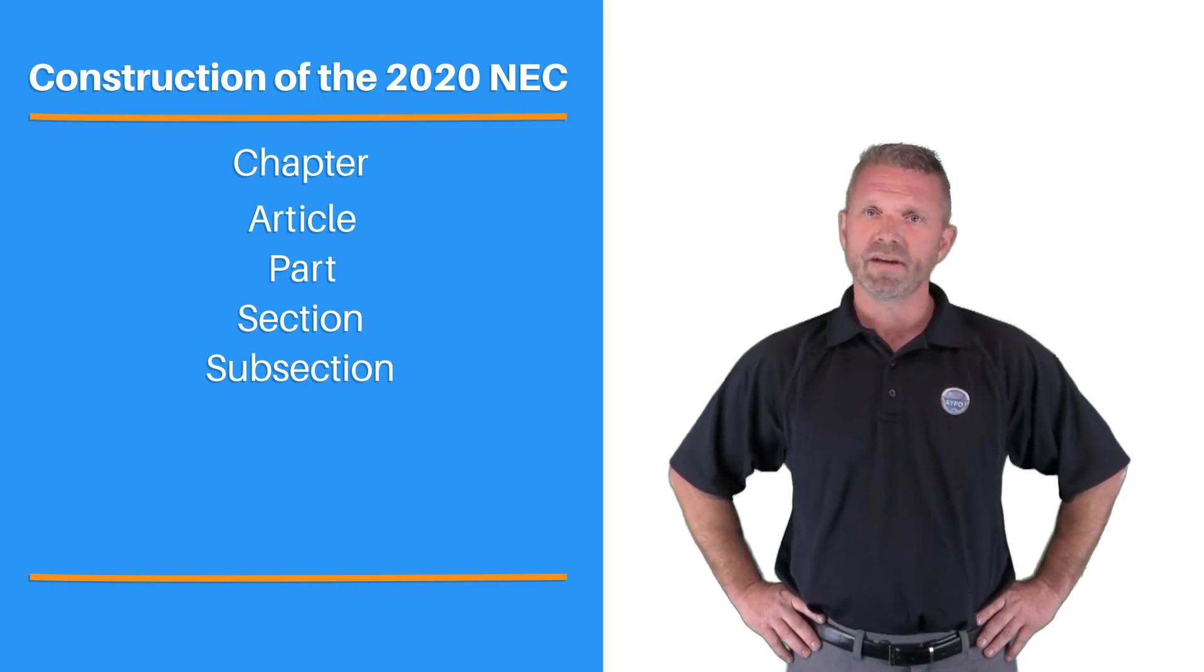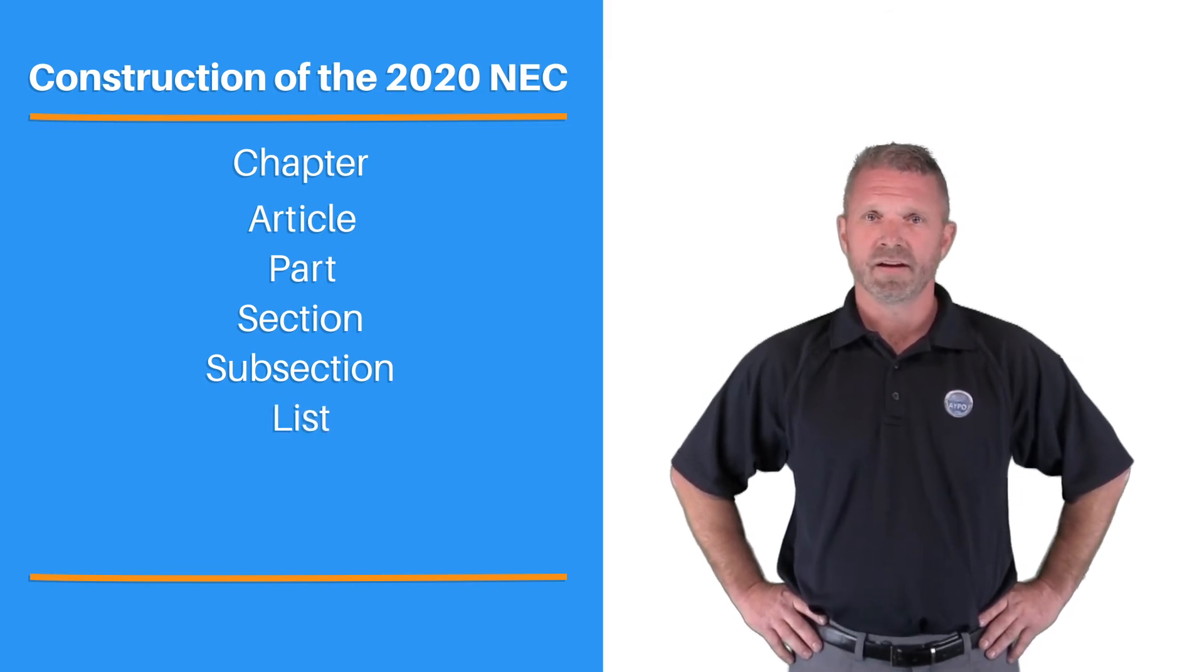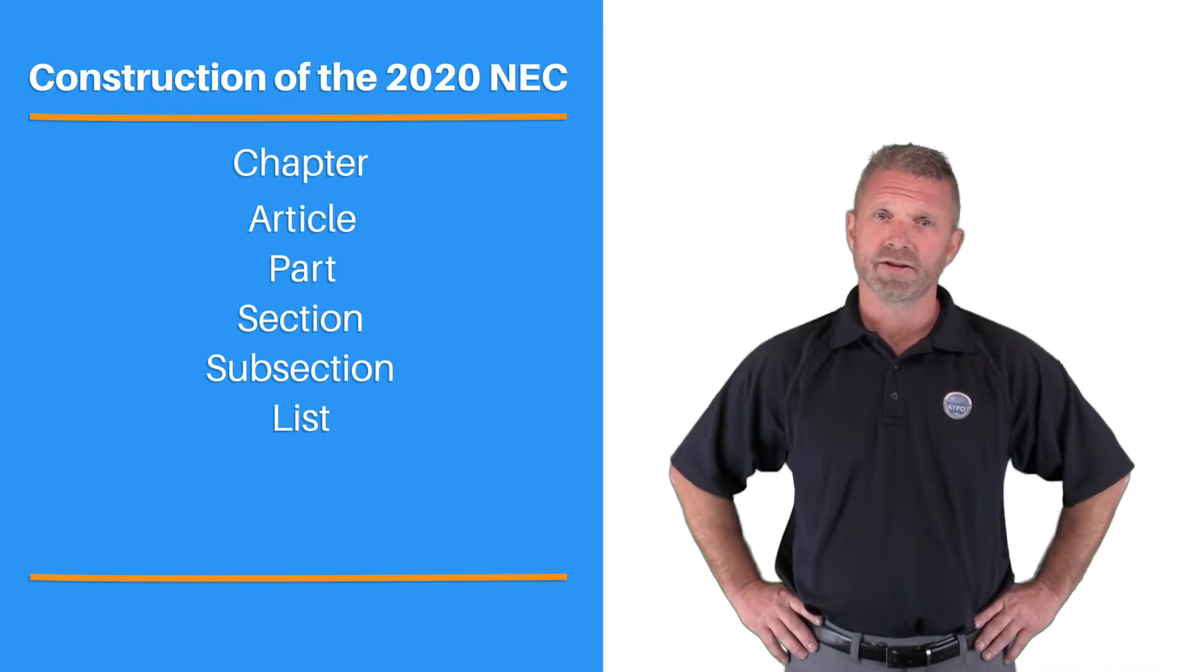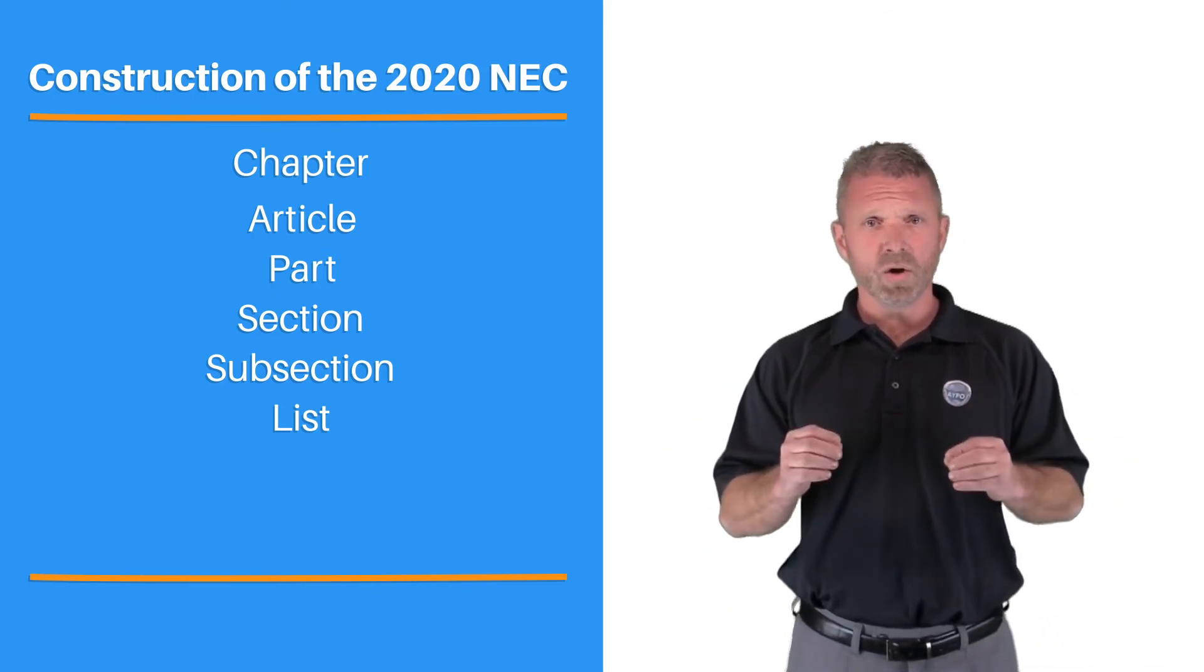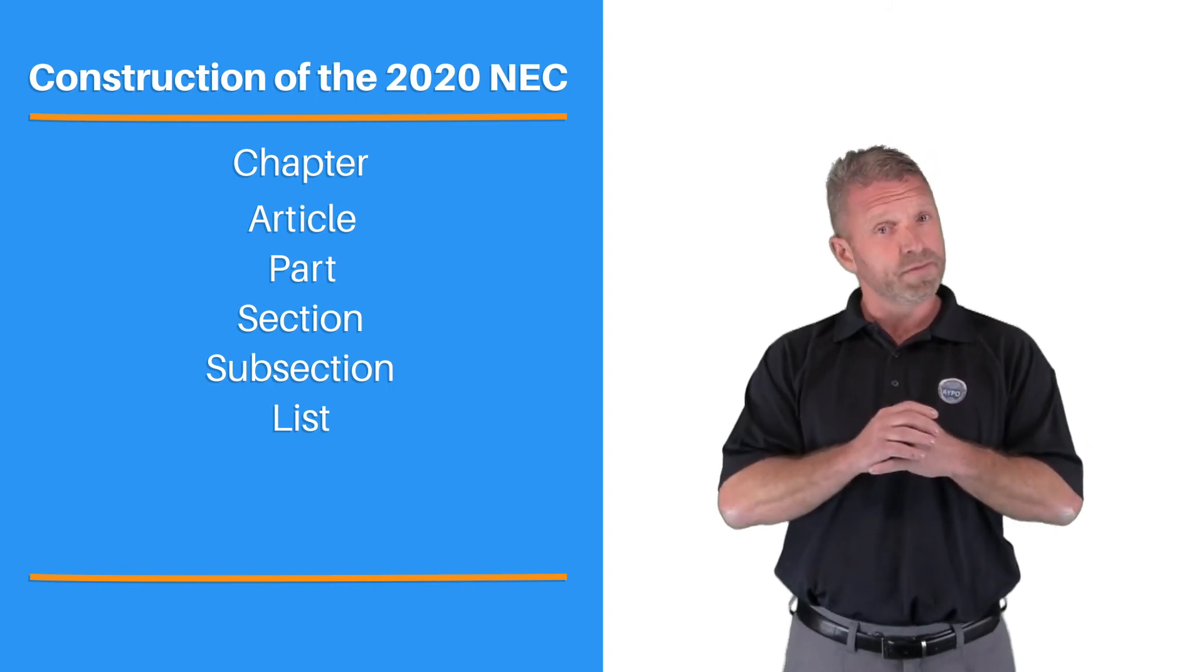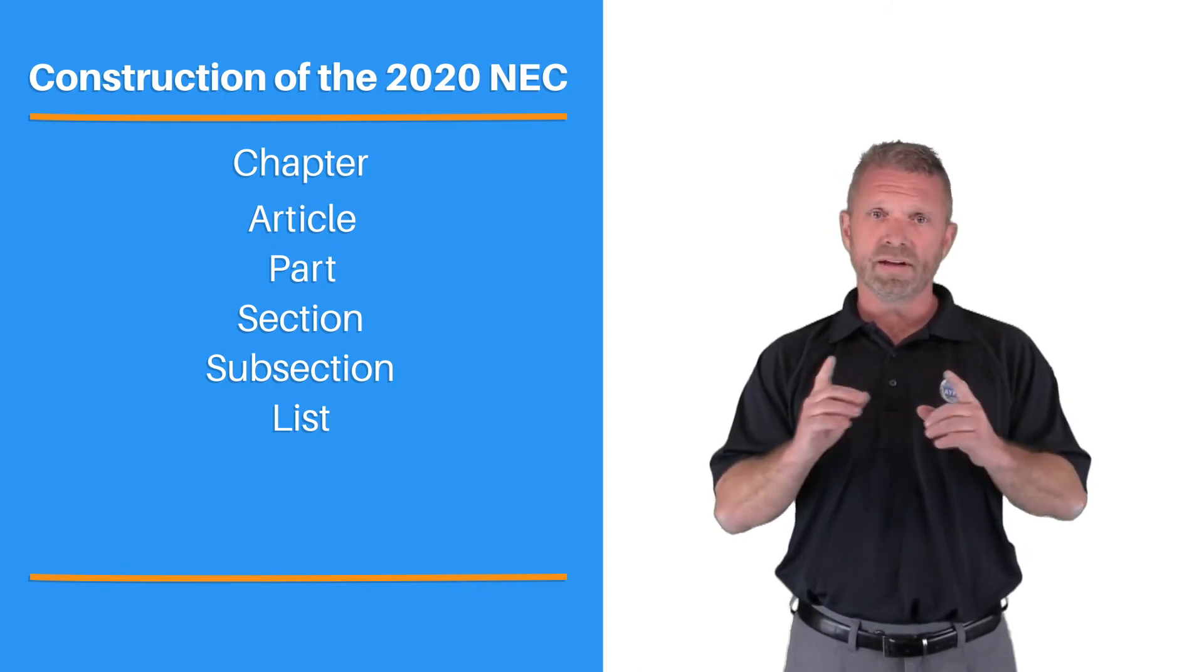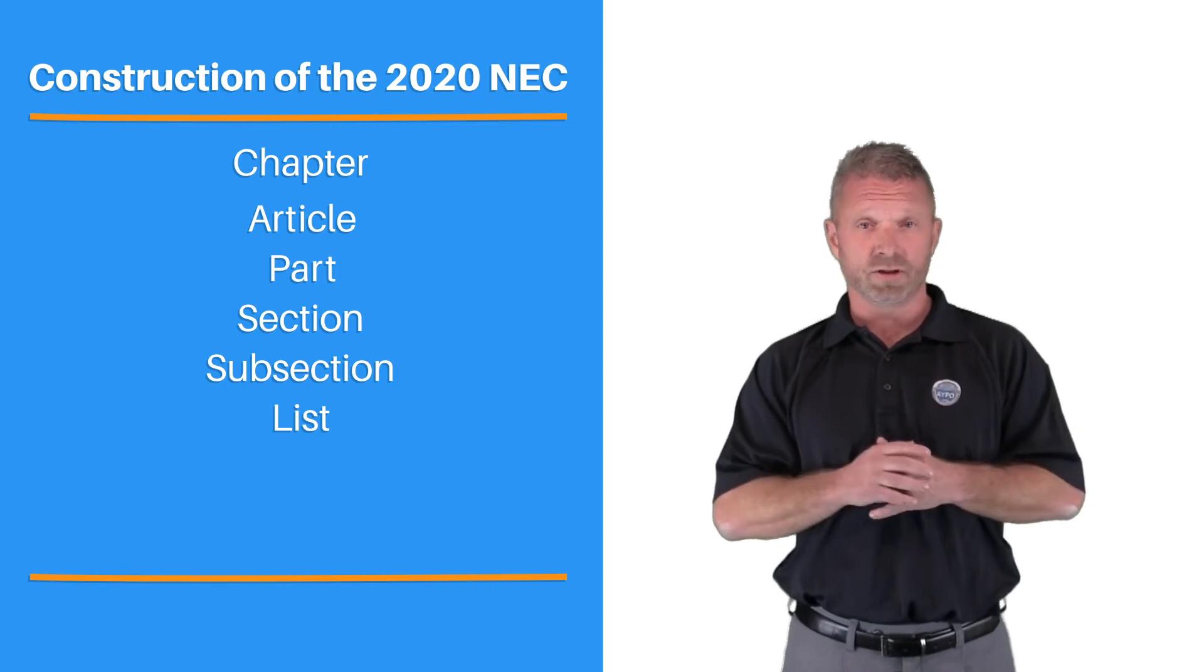The final subdivision within a section is the list. These are shown as lowercase letters or numbers. List items are conditions that must be met either in total, where all list items must be fulfilled, or individually, where each list item is an optional condition to be met.